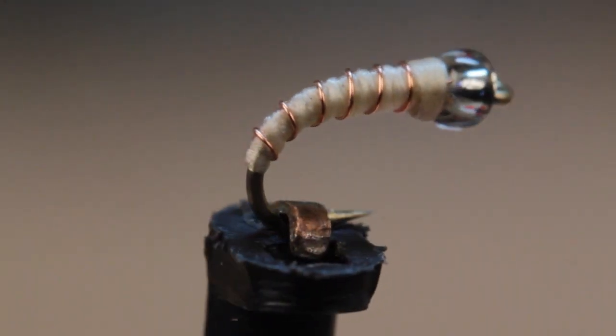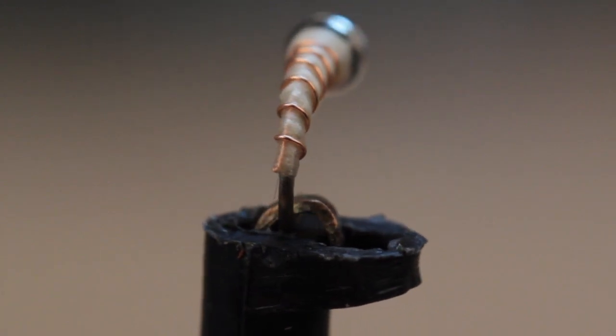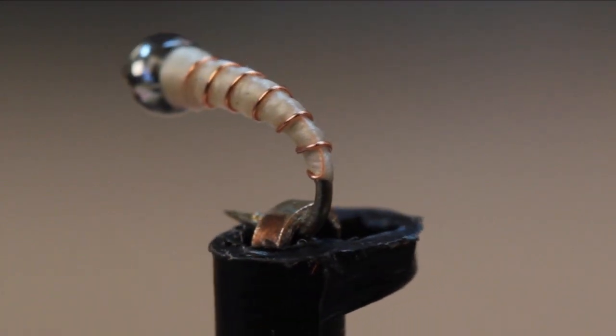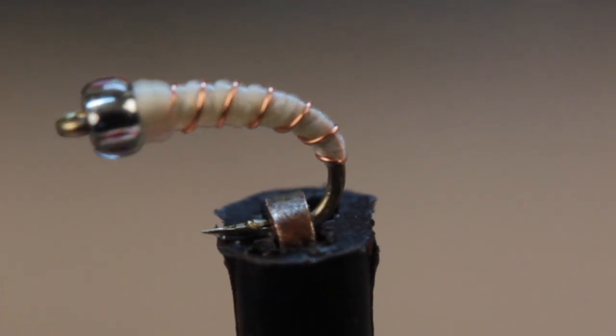This clean looking little fly is Pat Dorsey's Mercury Midge. If you're a fly tyer who's just beginning to tie small flies, this is a great place to start.